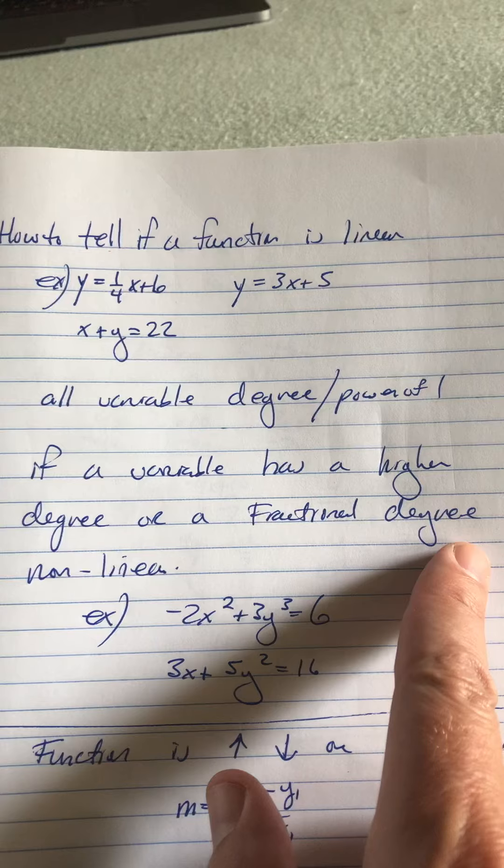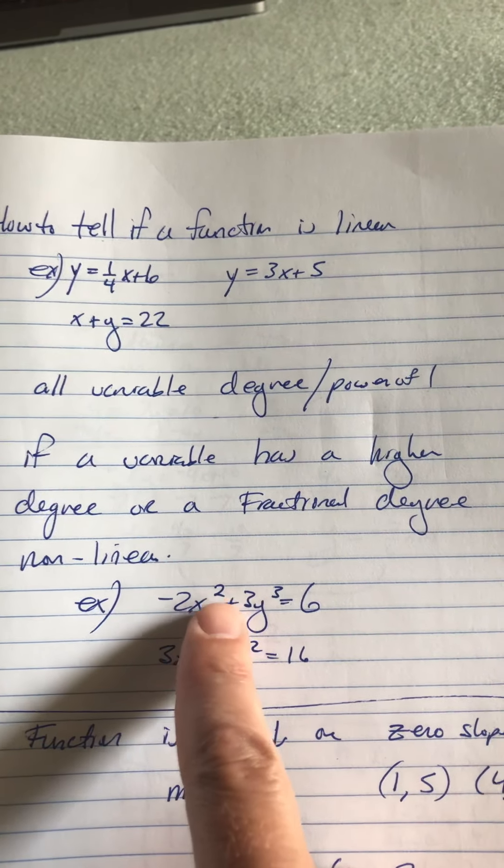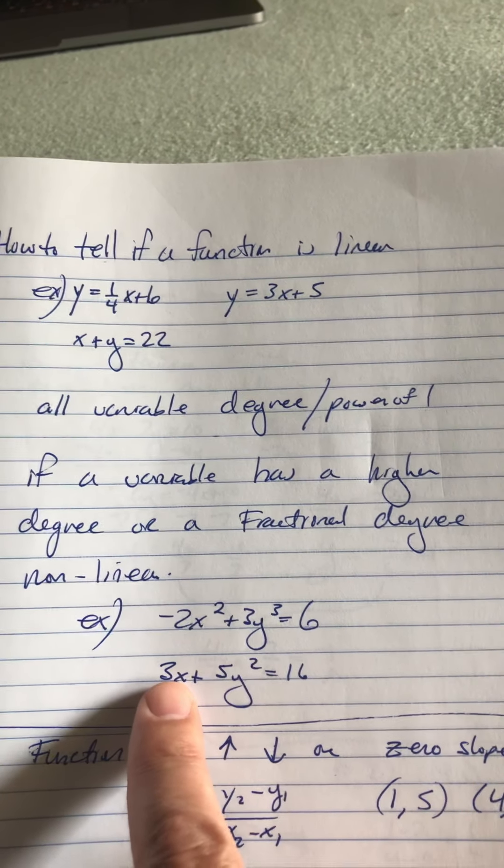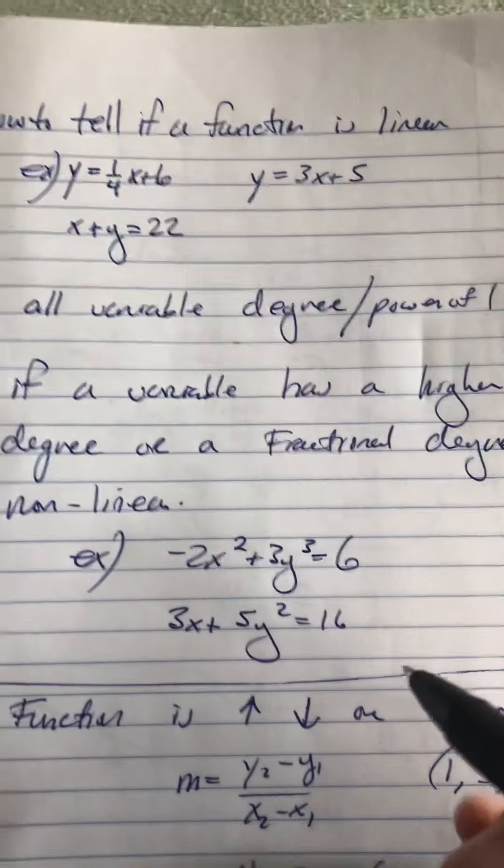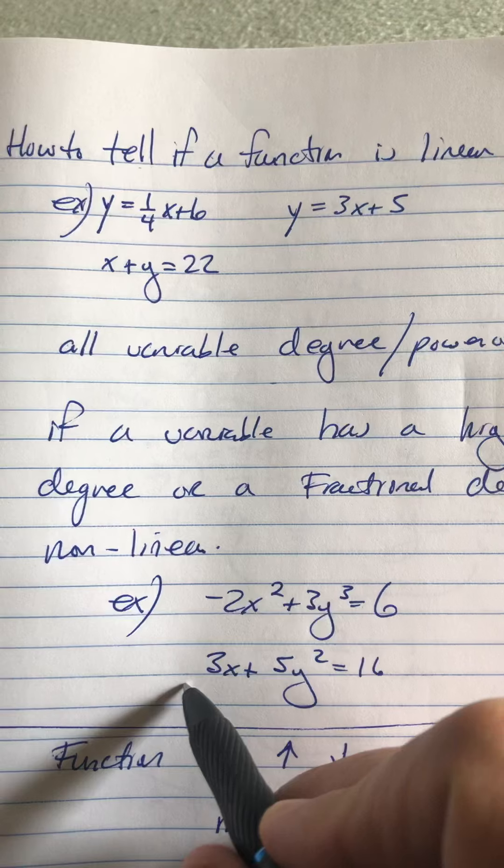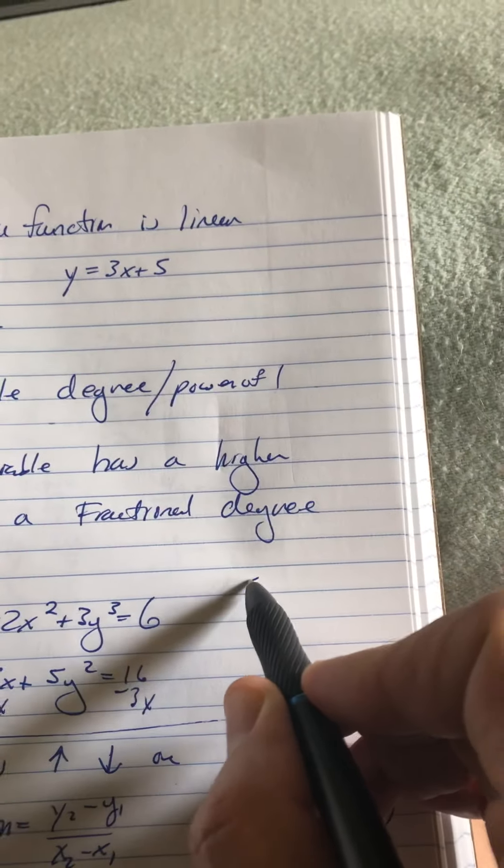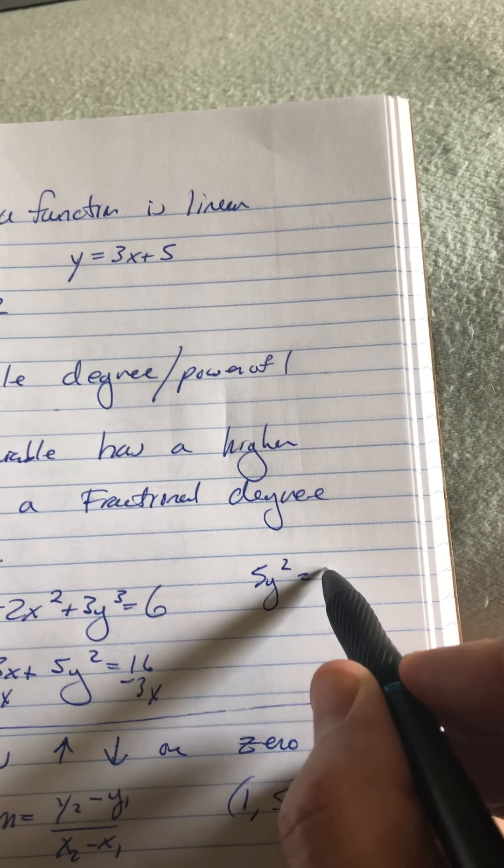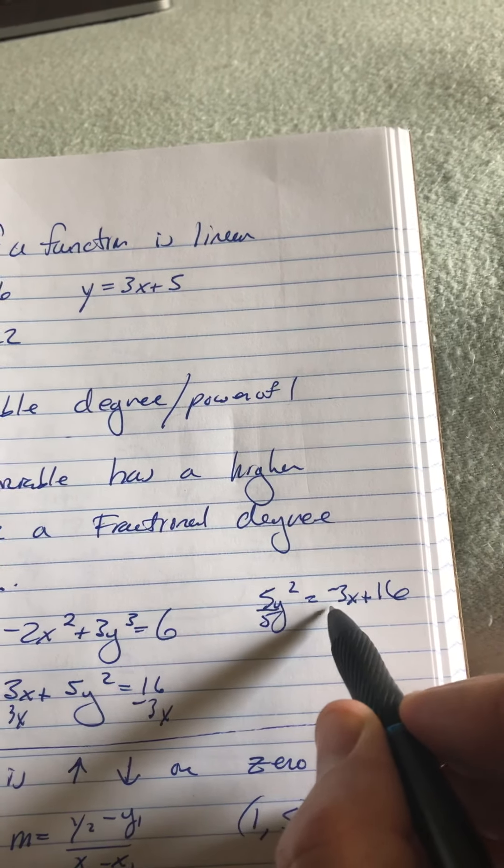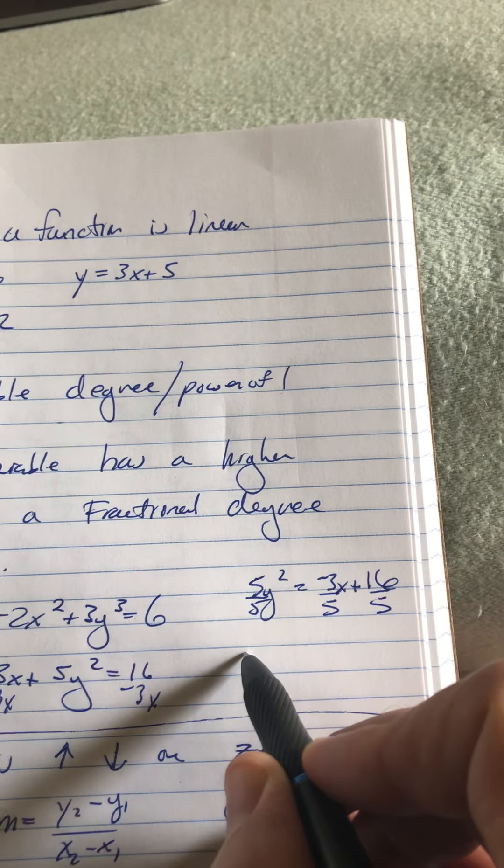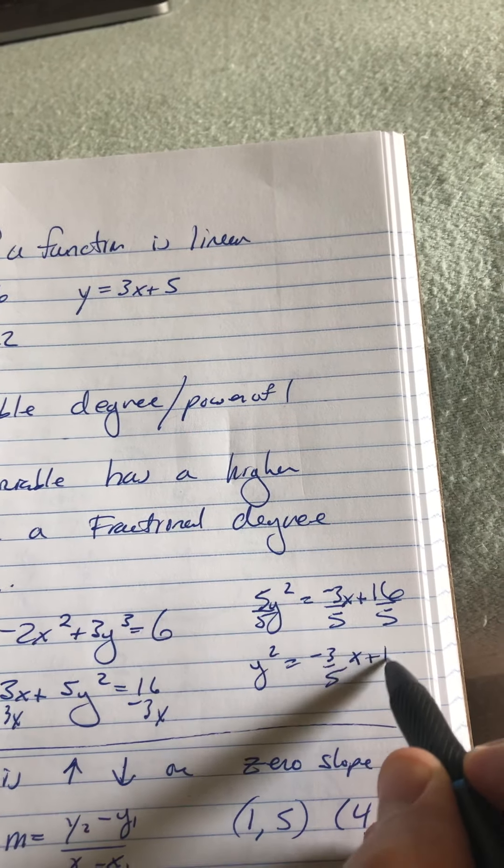Now, examples of things that are not linear. So we'd have negative 2x squared plus 3x cubed equals 6. And this one I want to solve for y, just to show you what it looks like. So I'm going to subtract 3x, and I'm going to subtract 3x. And over here I'm going to have 5y squared equals negative 3x plus 16. I'm going to divide through by 5, and so each of the terms gets a 5.